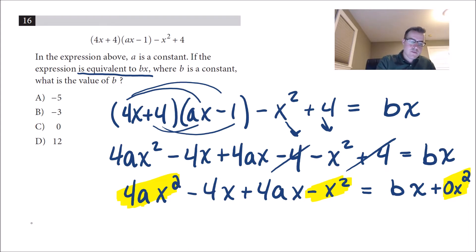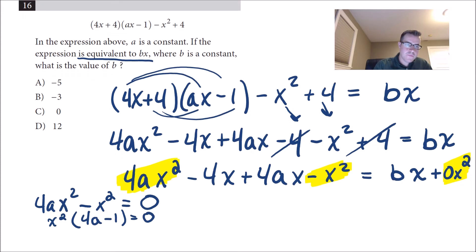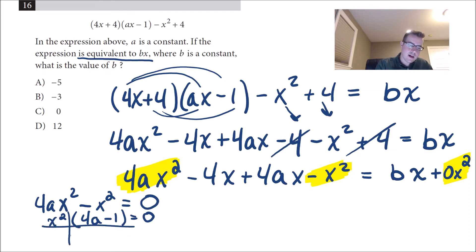So I need 4ax squared minus x squared to equal zero. So I'm going to go ahead and try to solve this out. I can factor out an x squared, and then I'll get 4a minus 1 equals zero. And then I'm just going to set that equal to zero to solve for a. So either x squared would be zero, or x would be zero, which I don't care about.